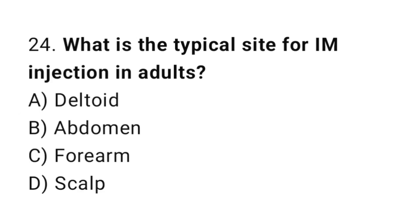Q24: What is the typical site for an IM injection in adults? The correct answer is A, the deltoid.